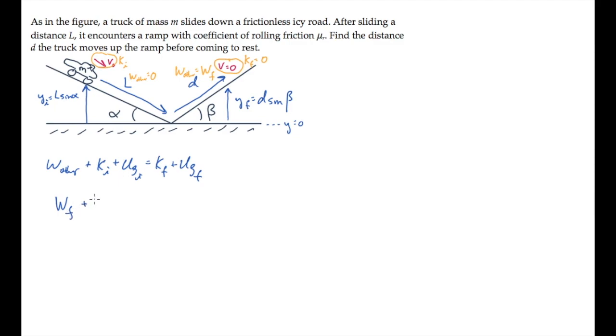The initial kinetic energy is half mV0 squared. The initial gravitational potential energy is mgYi, which is L sin α. There's no final kinetic. And the final gravitational potential is mgYf, which is d sin β.